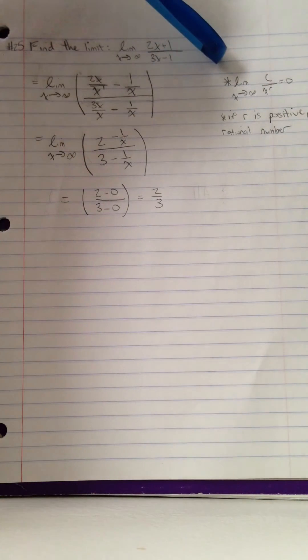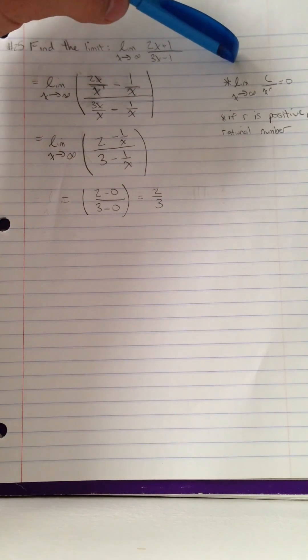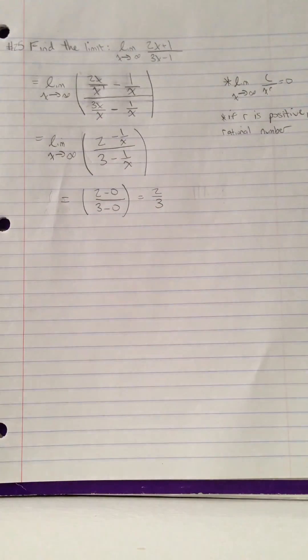Looking at our rule right here, we see there's a limit of x approaches infinity if c is positive over x over r, so we go to 0, only if r is a positive rational number.